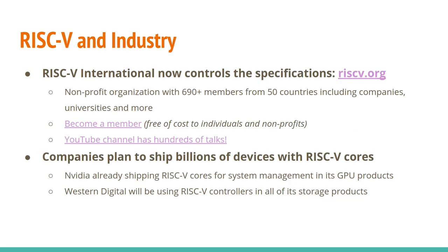RISC-V is seeing increasing adoption in industry. RISC-V International now controls the specifications at RISC-V.org — they took over from the original group at Berkeley. It's a non-profit organization and it keeps growing; last I looked there were 690 members from 50 different countries, including companies, universities, and non-profits. As an individual you can join yourself and it's free for individuals, non-profits, and universities. RISC-V International has a YouTube channel with hundreds of talks from the last several years, which is one of the ways I've learned a lot about RISC-V.